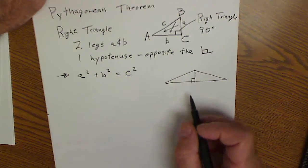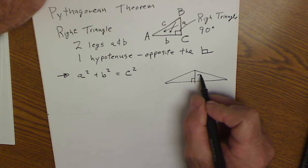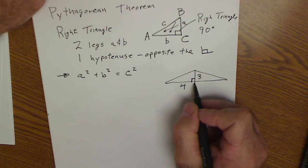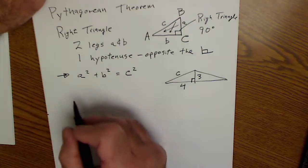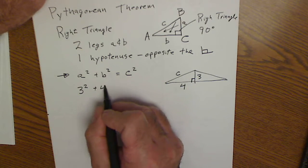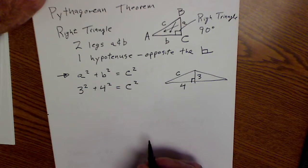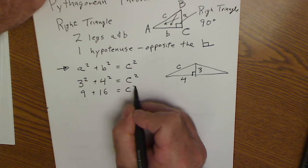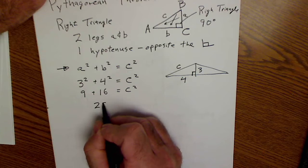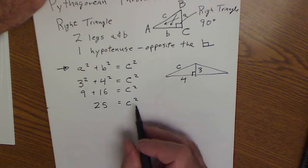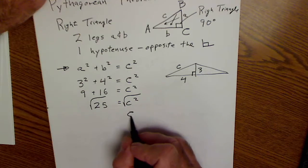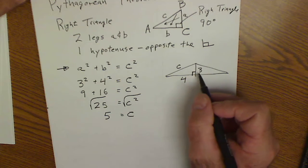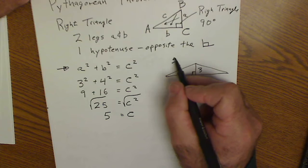Right now I'm just talking about the Pythagorean theorem. Let's say this altitude is 3 and this leg is 4. I have a right triangle and I want to find C, the hypotenuse. I do one leg squared plus the other leg squared equals C squared: 3 squared is 9, plus 4 squared is 16, so 25 equals C squared. Take the square root of both sides and C equals 5 — we don't keep the negative because we're talking about length.